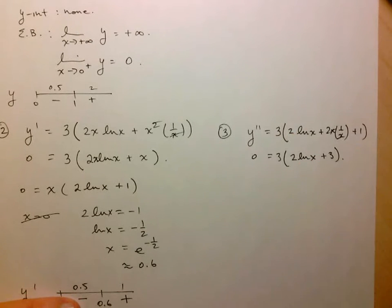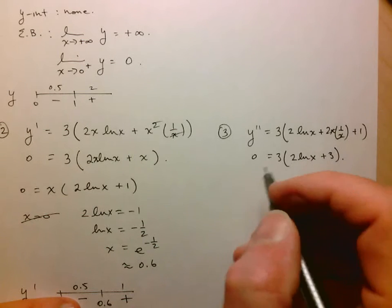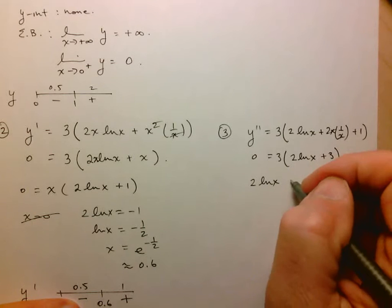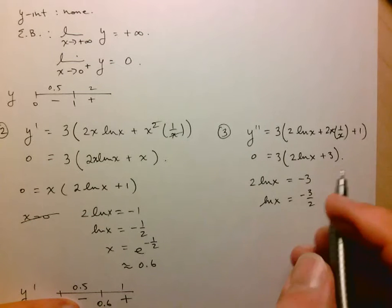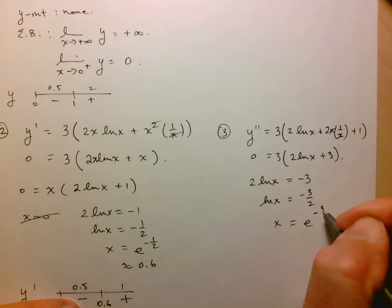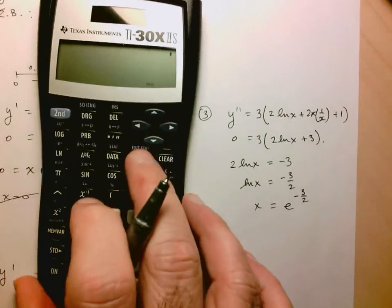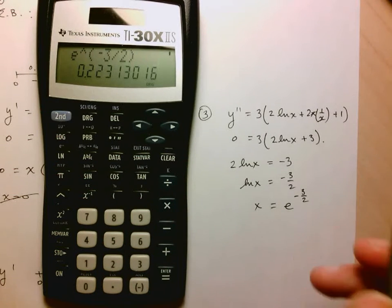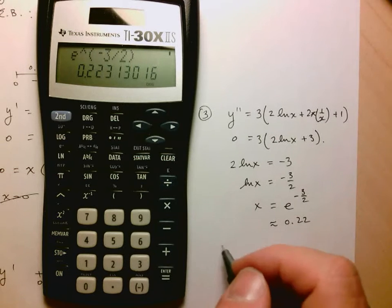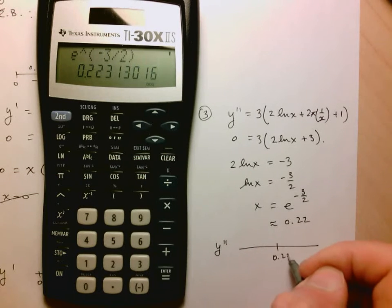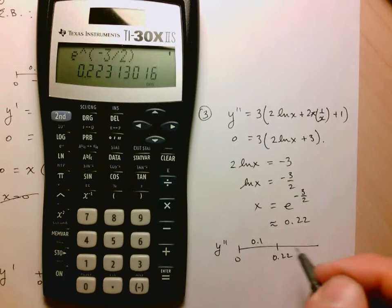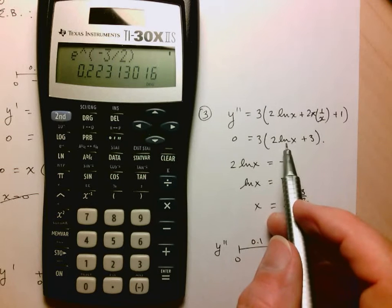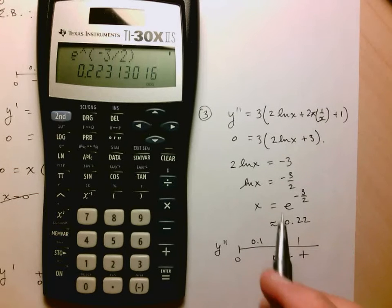Let's find any points of inflection by setting 2 lnx + 3 = 0. That gives lnx = -3/2, so x = e^(-3/2) ≈ 0.22. Testing with x = 0.1: 2 ln(0.1) + 3 gives a negative number, so the function is concave down. At x = 1: 2 ln(1) + 3 = 3, which is positive, so concave up. Going from concave down to concave up confirms a point of inflection at x ≈ 0.22.